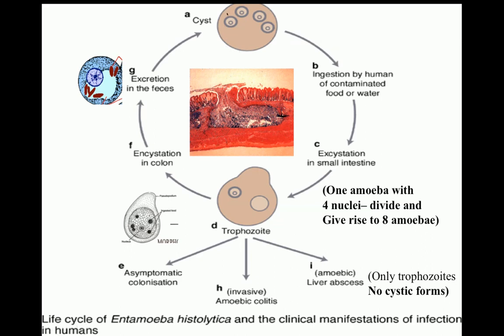Some of these amoebae can penetrate deeper, passing through the muscular layer and reaching the portal circulation. From the portal circulation they are carried to the liver, where they start multiplying and result in formation of liver abscesses, also known as amoebic abscesses. An important point to note is that amoebic abscesses only contain trophozoites — there are no cystic forms produced or seen in the liver.